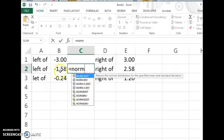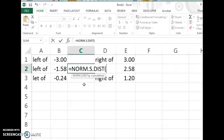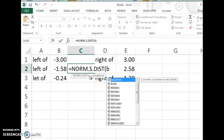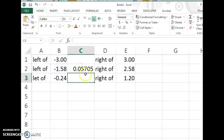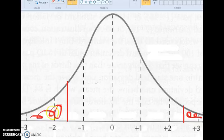The area to the left of negative 1.58, we're going to use the standard normal distribution, so equals norm.s. And then we want our data value. So I'll use cell reference there. And we use true. And Excel tells us the area to the left of that data value. So about 5% of the area is to the left of that data value.